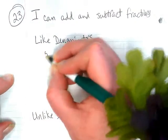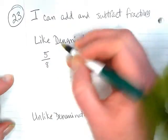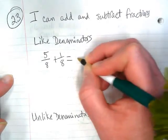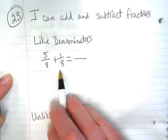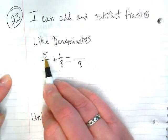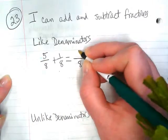So for instance, with like denominators, if I have 5 eighths plus 1 eighth, that's pretty simple. We keep the eighths and we add the numerator. 5 plus 1 would give us 6.